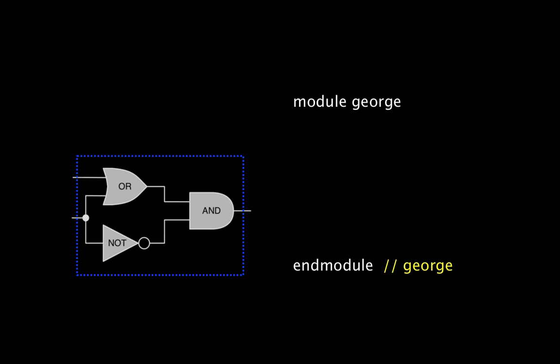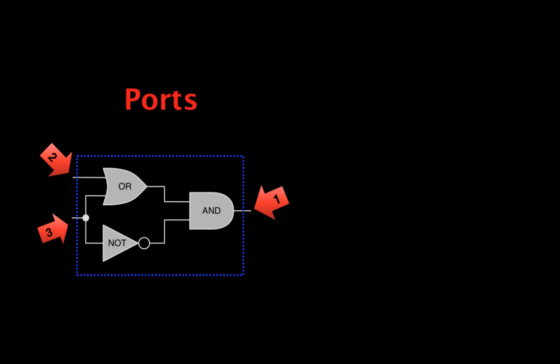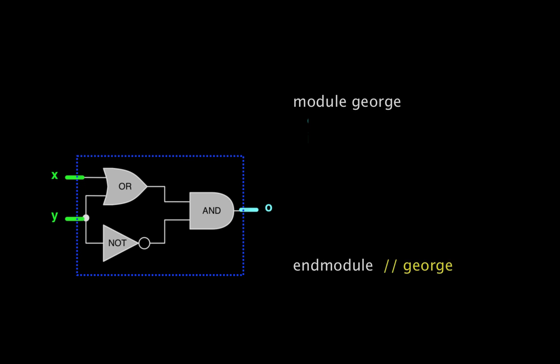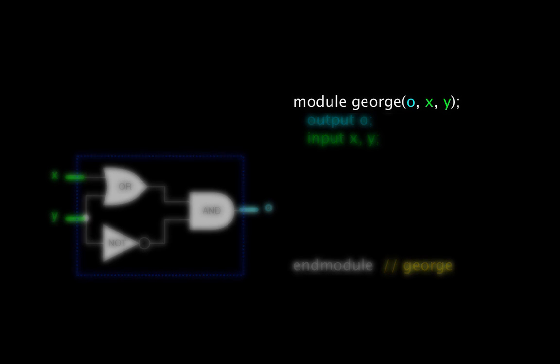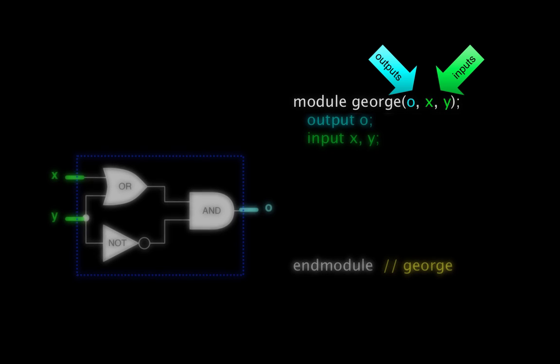Next, we describe how the module connects to the outside world using what are called ports. Our example module has three ports, and each of these needs to be given a name. We then tell Verilog whether these are input ports or output ports. Notice that when I listed the ports on the first line, I put the output ports first, which is a common convention.